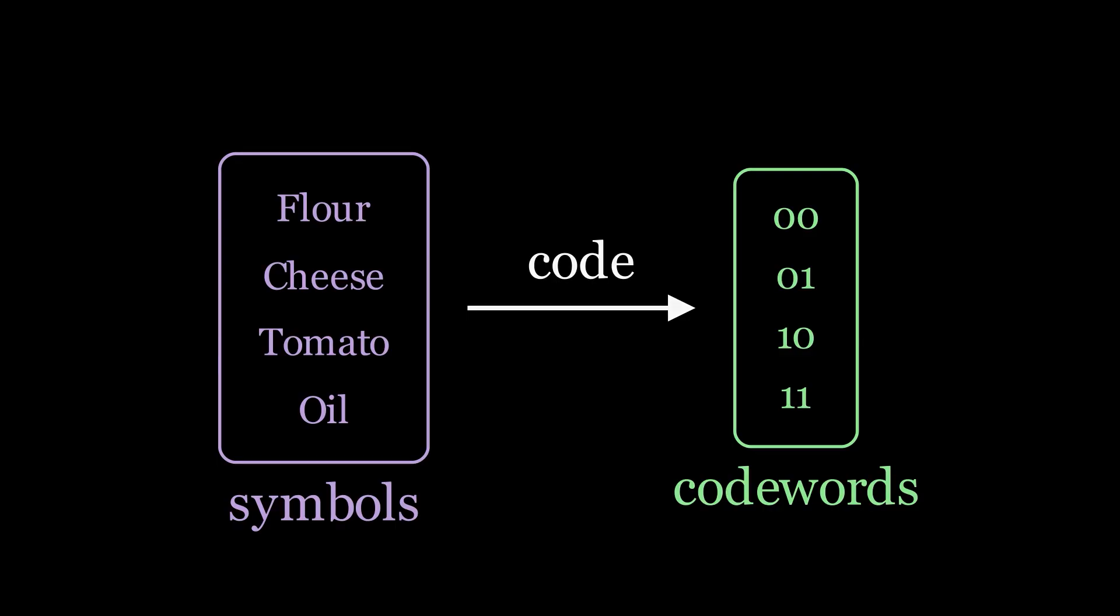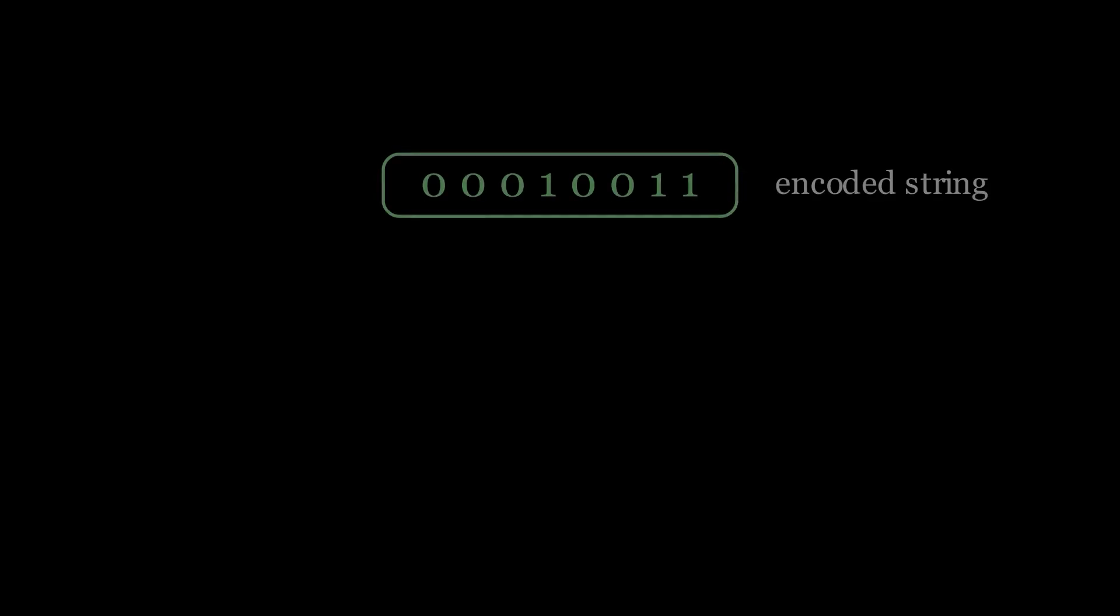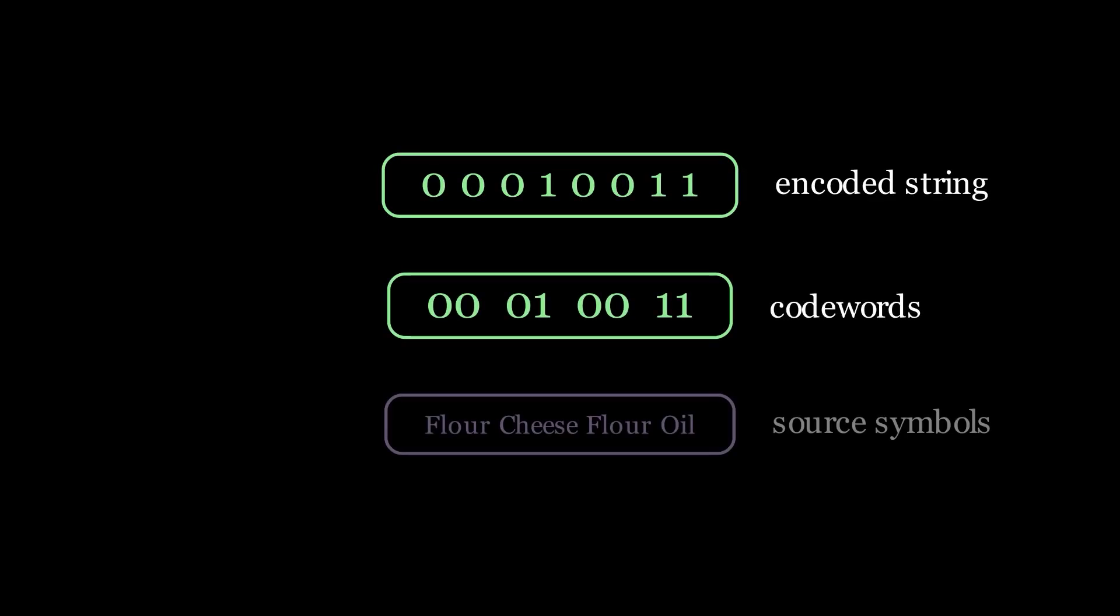Flour gets the code 00, cheese gets the code 01, 10 for tomato and 11 for oil. Now every time she goes I give her the encoded string which she breaks down into code words out of which she makes out the ingredients but we soon run into a problem.